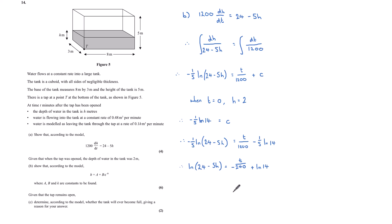Let's start by multiplying both sides by minus 5. Multiplying by minus 5 tidies this up a little bit. We've got ln of 24 minus 5h now is equal to t over minus 240 plus ln 14. Remember, when we subtract a log from another log, it is the same as dividing. ln of 24 minus 5h over 14, that's subtracting ln 14, is equal to my minus t over 240.